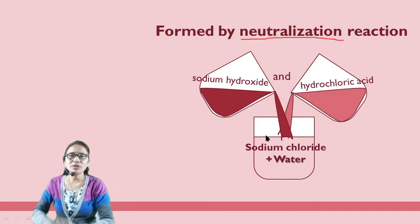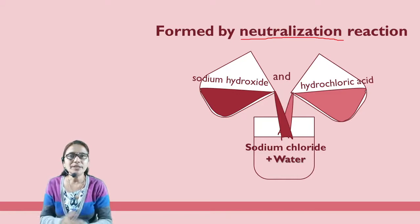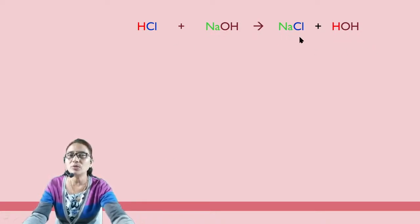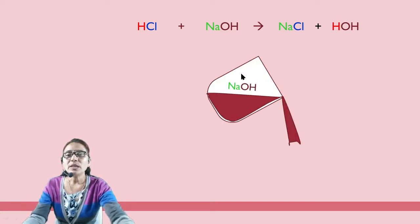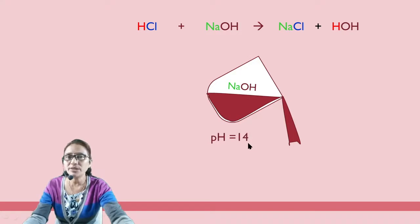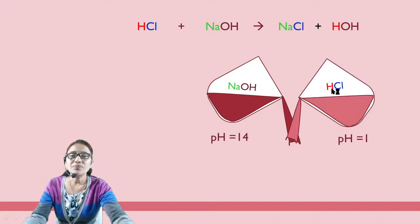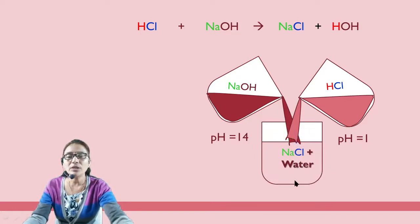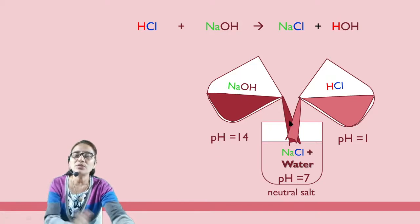In the previous video we studied acidic salt, basic salt, and neutral salt and how they form — the link is in the description box. Now let's revise how sodium chloride is formed. NaOH, sodium hydroxide, is a strong base with pH 14. When it reacts with HCl, hydrochloric acid with pH 1, they form NaCl table salt along with water at pH 7 — a neutral salt formed from a strong acid with a strong base.